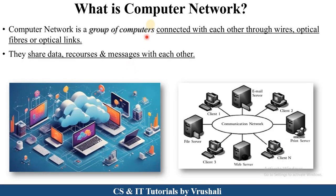The first point is what exactly a computer network is. In a computer network, there is a group of computers connected with some wires, optical fibers, optical links, or online connections. After being connected, all these computers share data, resources, and messages with each other. So this is the basic definition of computer network.